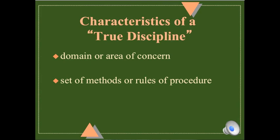Thirdly, and Fauché said most importantly, was a history. Why was the history important? Because it was from the history that the domain evolved, that the set of rules or procedures coalesced from. So, over time, we produce a domain, a set of rules.